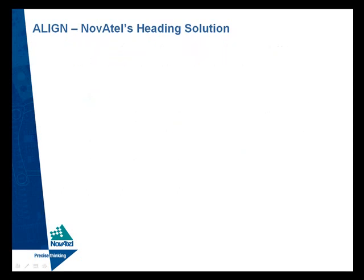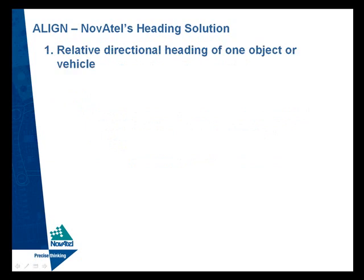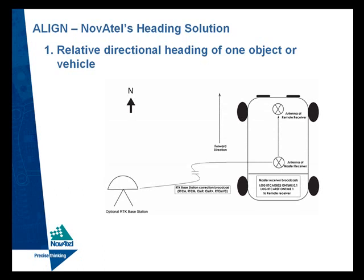In the first application — relative directional heading of one object or vehicle — the master and remote receivers and antennas are installed on one vehicle, and the directional heading solution is based on the direction of motion of the vehicle. With the addition of another base station and radio modems, the user has the option to use RTK for higher position accuracy of the master receiver using Novatel's proprietary advanced RTK algorithm.